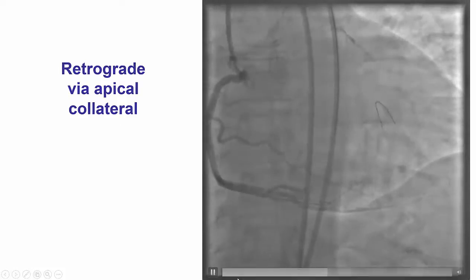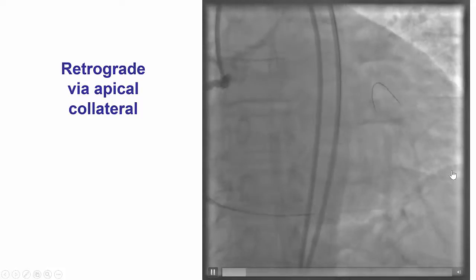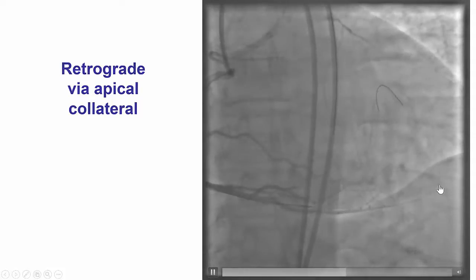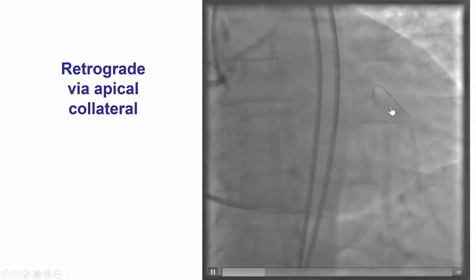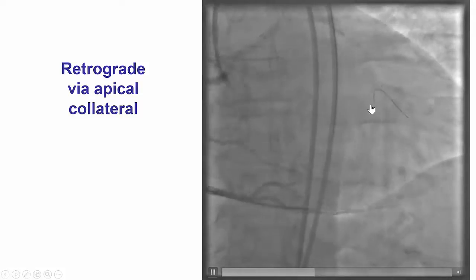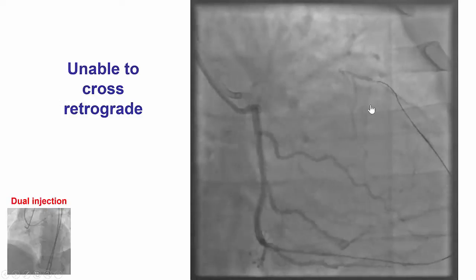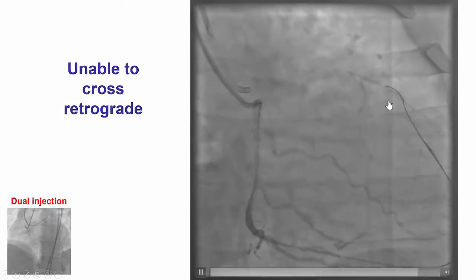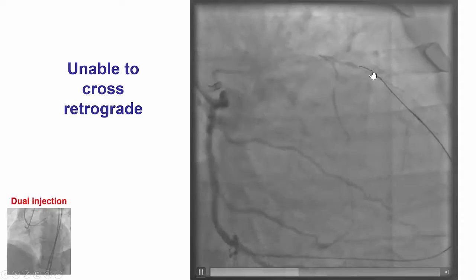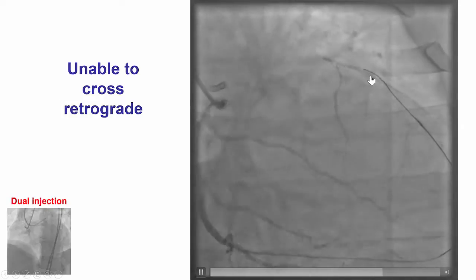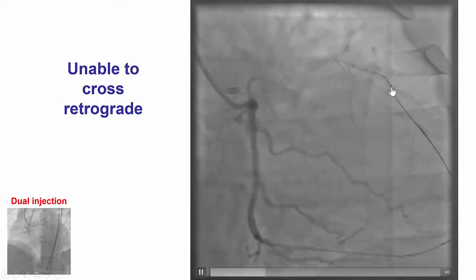We were able to advance a guidewire all the way from the apical collateral into the distal LAD successfully, as shown in this injection from the right. We then did retrograde wire escalation; however, the wire went into the subintimal space in the mid-LAD.